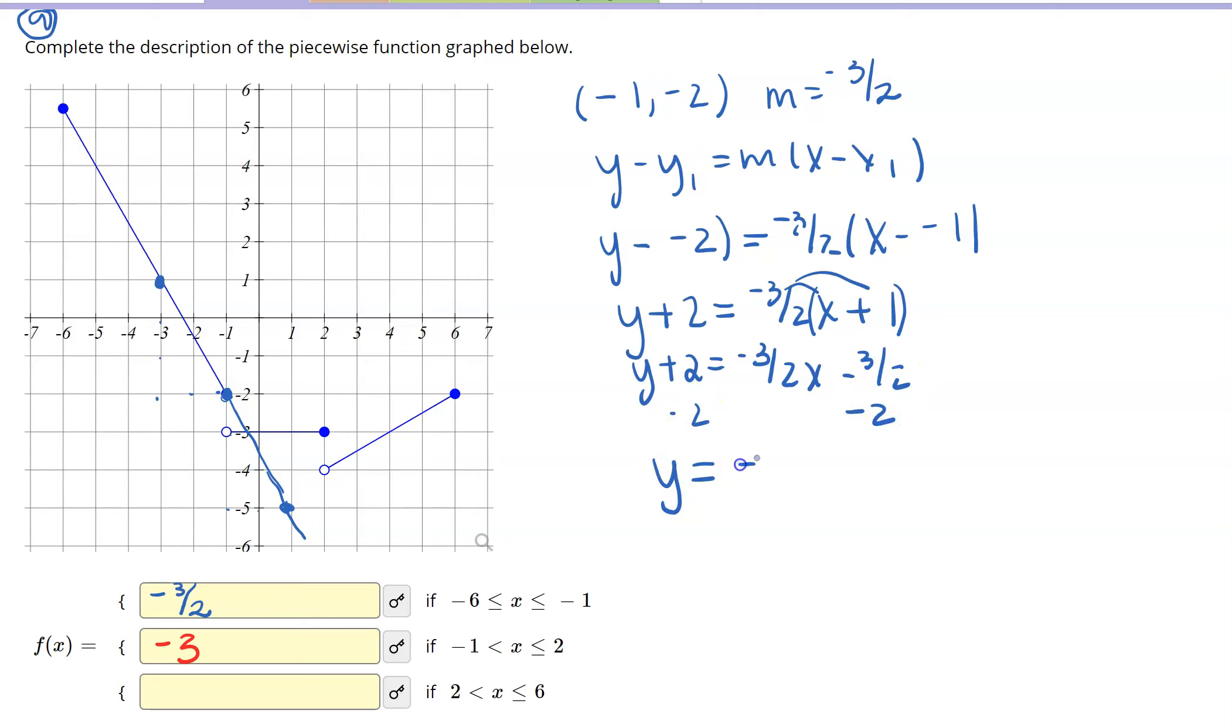So it gives me y equal to negative 3 halves x, and then just use your calculator to help with this. The negative 3 halves minus 2, and that gives me minus 3.5. Now if you want, you can turn that into an improper fraction just using your calculator, which is also negative 7 halves. And so I'm going to say x minus 7 halves.